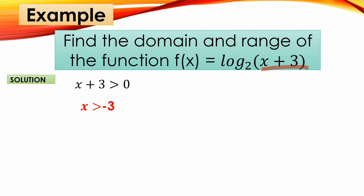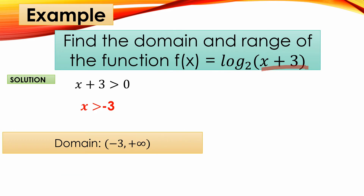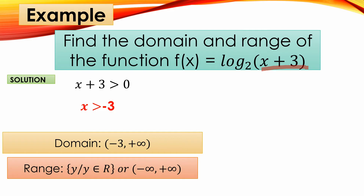After setting up the inequality, transpose positive 3 — it becomes negative 3 on the other side. So x > −3. Meaning, the domain is from negative 3 up to positive infinity. The range is all real numbers, from negative infinity to positive infinity.